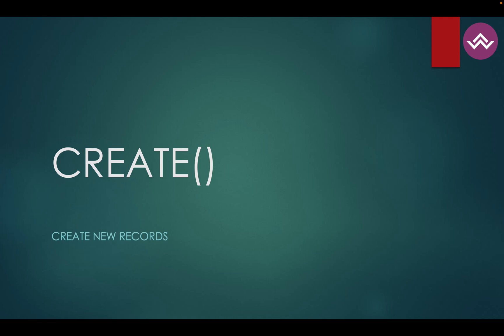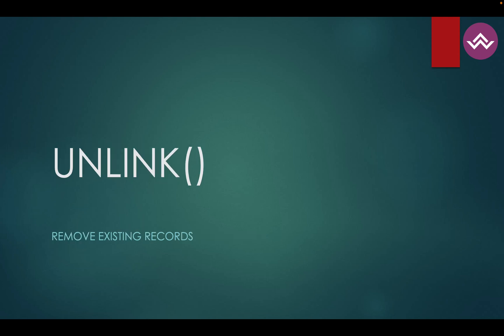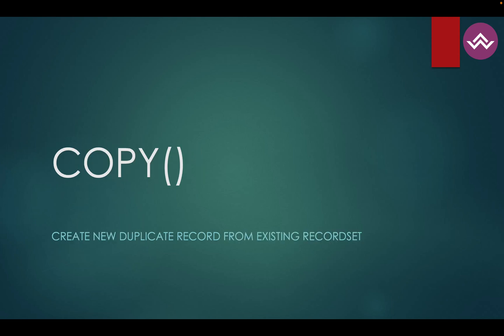The write method is used to update a record and store it into the database. Then there is the unlink method — when you try to delete any records, it goes through this unlink method first. The copy method is used when you want to duplicate an existing record.